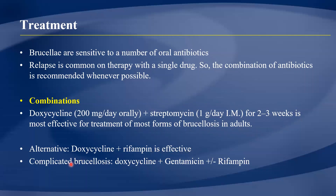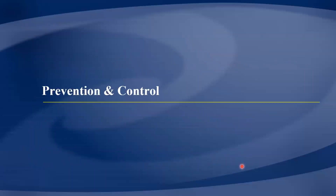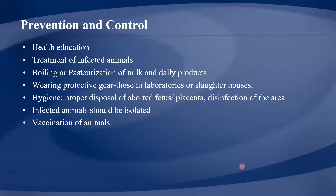For complicated forms of brucellosis, a triple therapy regimen may be used: doxycycline, an aminoglycoside such as gentamicin, and rifampicin. This triple combination helps ensure adequate bacterial clearance and reduce the risk of relapse.